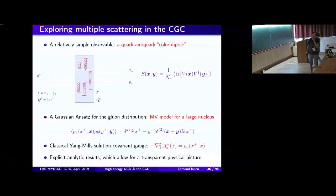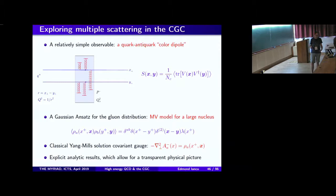We started exploring proton scattering off the dense gluon distribution. To do that in the most simple setup, we selected a relatively simple observable: a quark anti-quark color dipole as the probe in the high-energy factorization of deep inelastic scattering. This is called the dipole scattering off a dense gluon distribution, described by the McLerran-Venugopalan (MV) model — a Gaussian model applying in principle to a very large nucleus, characterized by a two-point function of the color charge density.